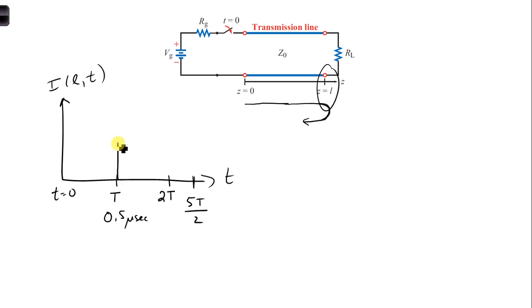So at this moment, I'm going to label this I1 plus plus I1 minus, which is 0.06 amps.